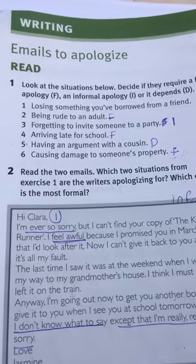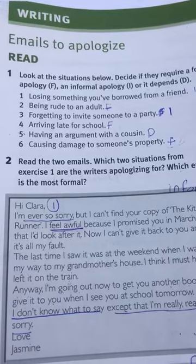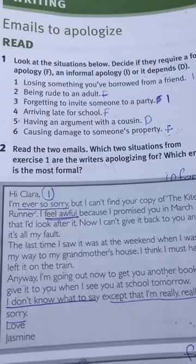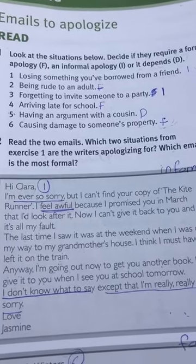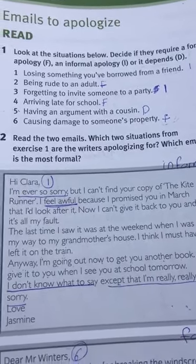The second one: being rude to an adult — formal apology. Forgetting to invite someone to a party — informal apology.